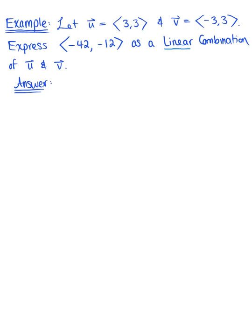So what does this mean, a linear combination of u and v? So what do we want here? This means that we want to take this vector minus 42, minus 12, and rewrite this so that it is the scalar multiple of vector u. So some scalar multiple c times vector u plus a scalar multiple d times vector v. So this is a linear combination of these two vectors, and this is what we're being asked to do here.